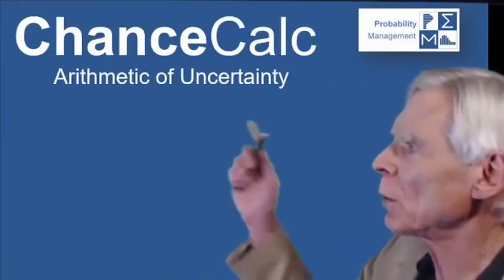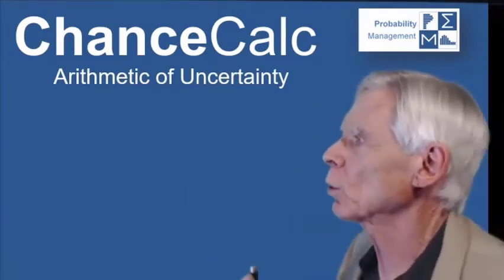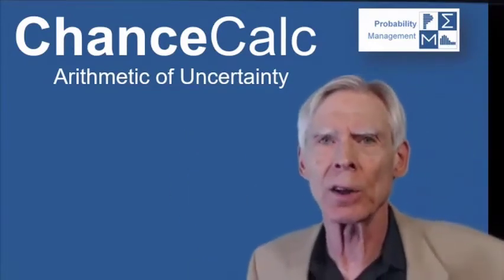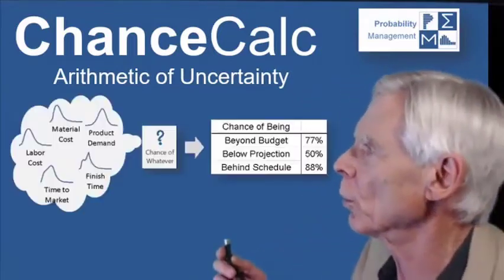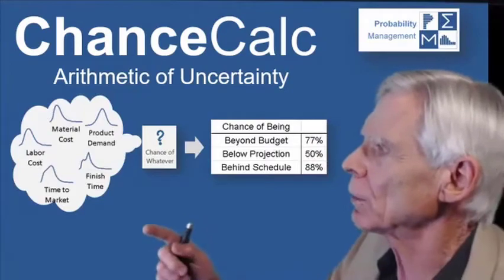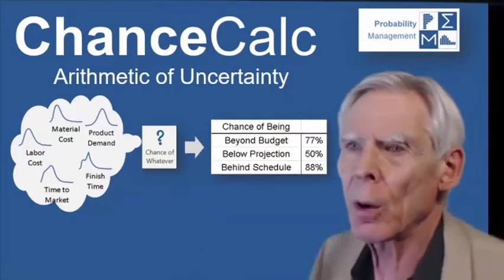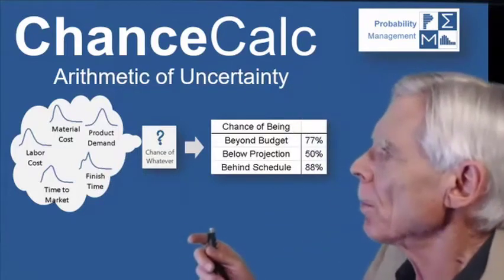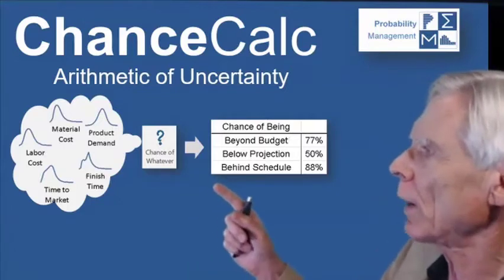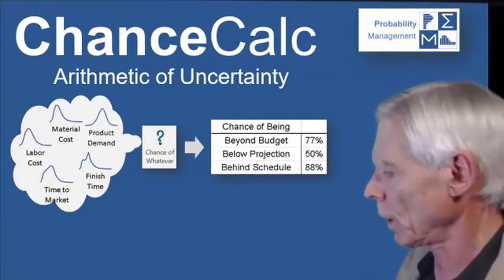I'm going to use Chance Calc for doing the arithmetic of uncertainty. Now if I told you what mathematicians call this, it would trigger post-traumatic statistics disorder, so let's put that off for a minute. The basic idea is you have all kinds of uncertainties, which can now be stored in the cloud from authoritative sources, and you can run these through Chance Calc to find out the chance of being beyond budget, below projection, or behind schedule.